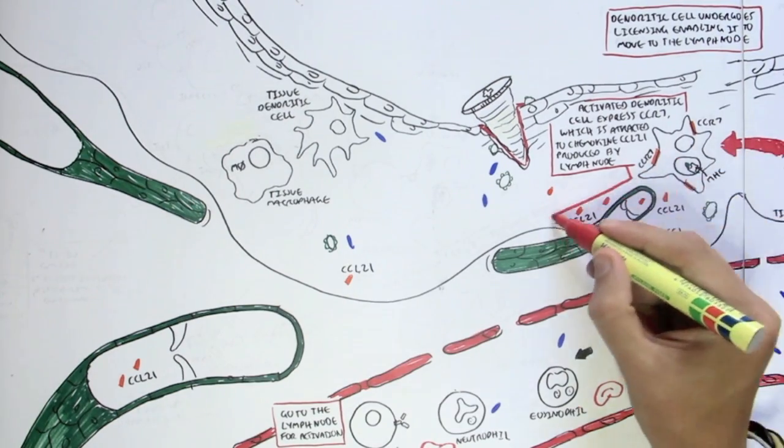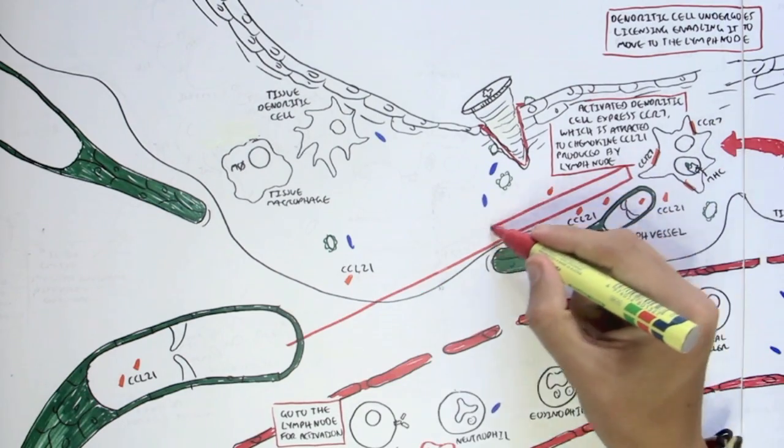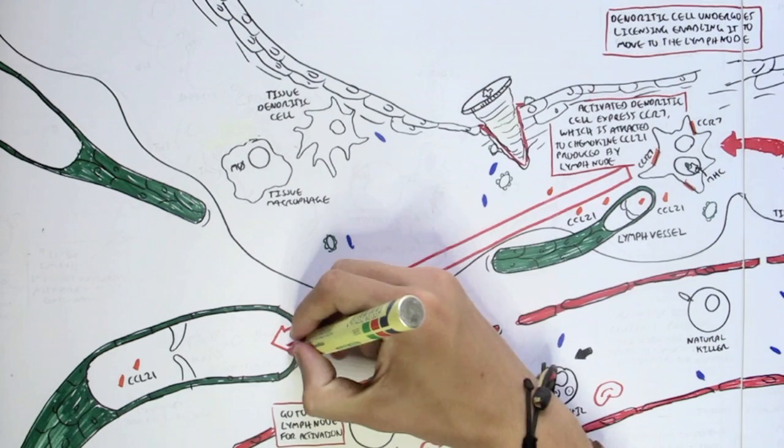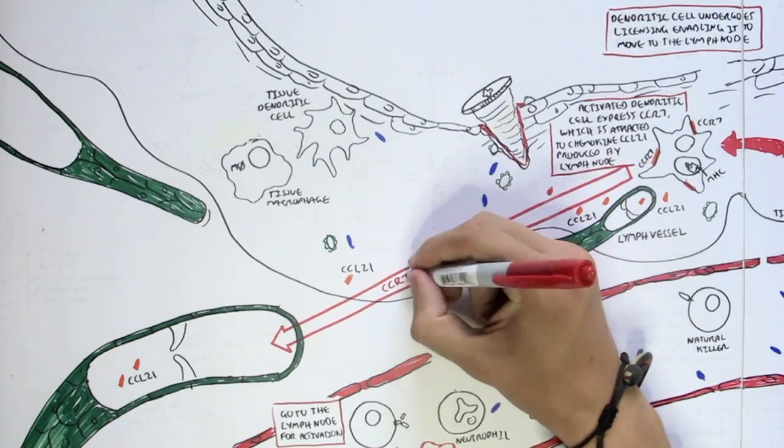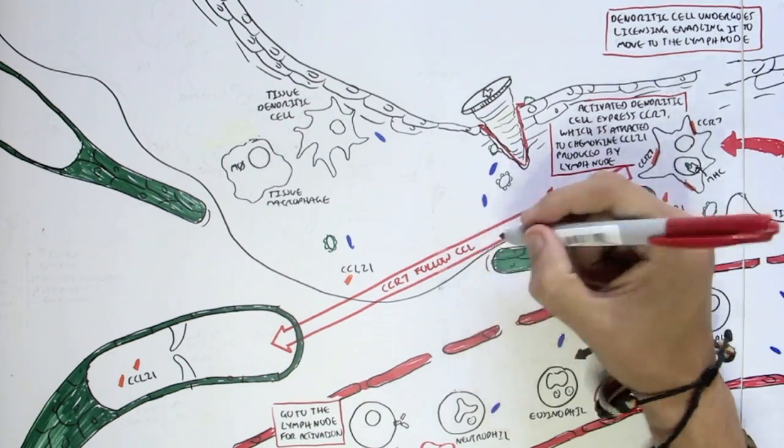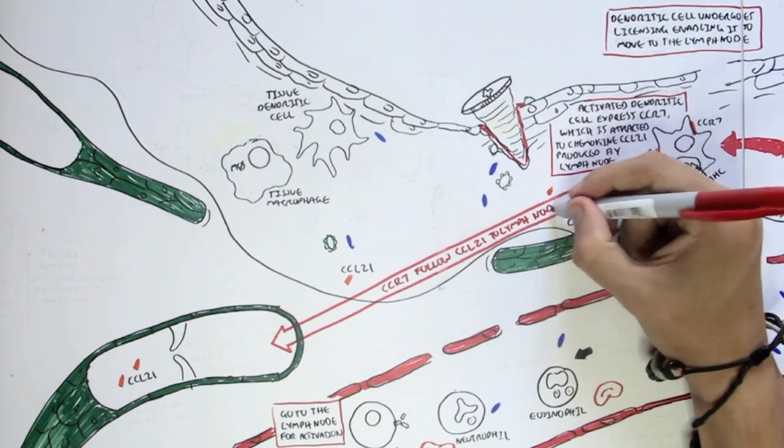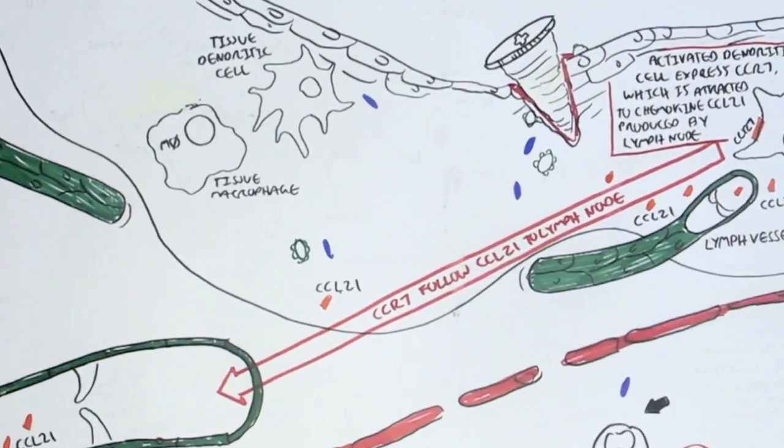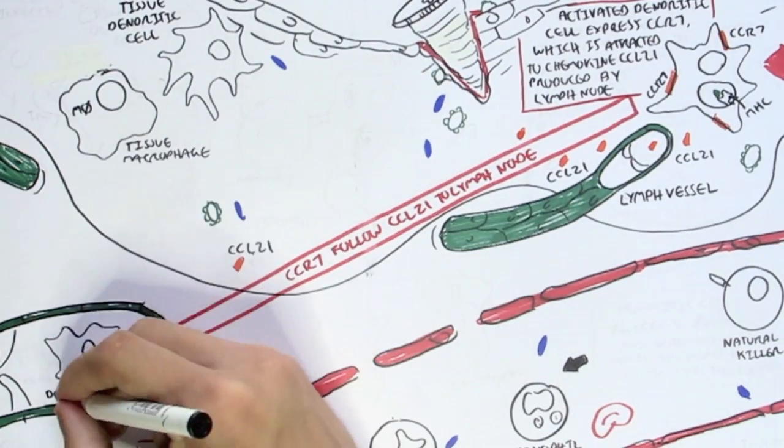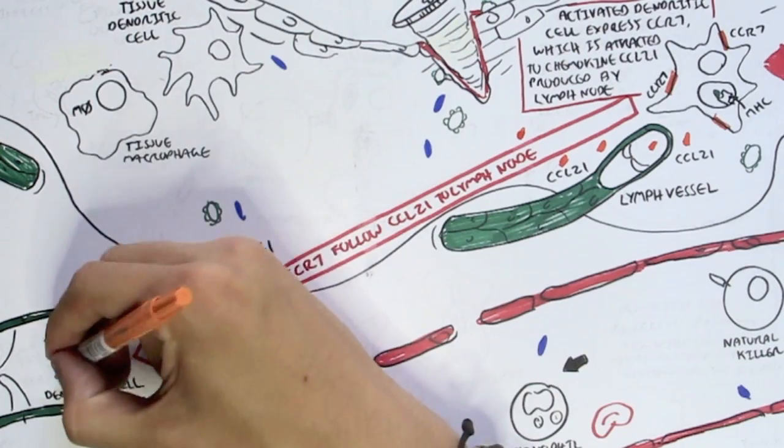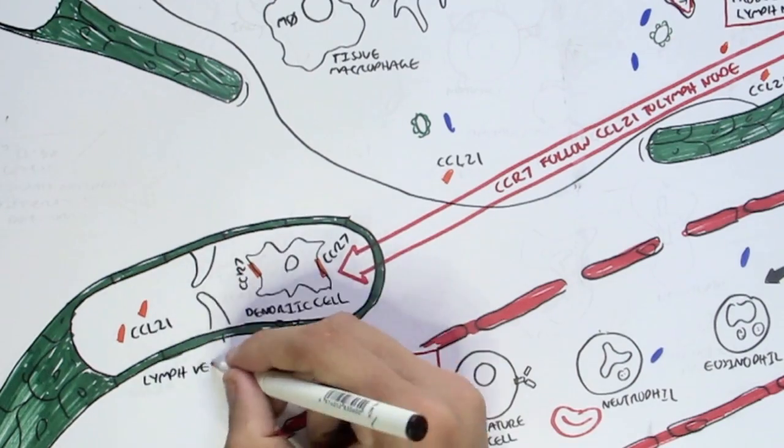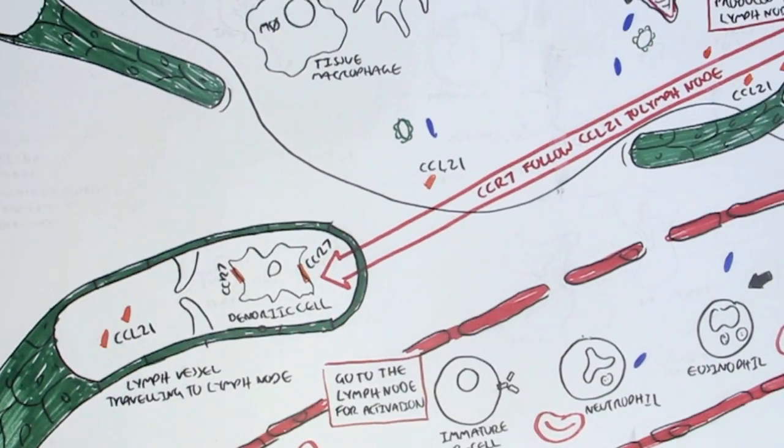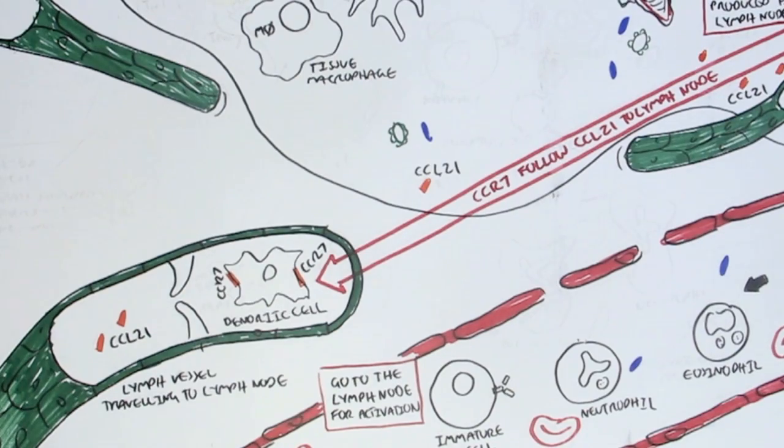So here we have the activated dendritic cell with the antigen of the pathogen on the MHC complex with the expressed CCR7 on the cell surface, which will be attracted to the chemokine CCL21 and travel to the lymph node through the lymph vessel as shown here. And so this lymph vessel is traveling towards the lymph node with the dendritic cell. Let's just leave the dendritic cell there for now and we'll go back to it.